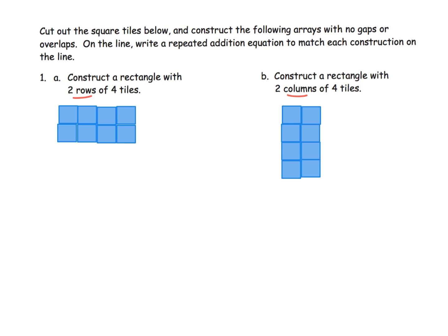When it comes to repeated addition, for mathematicians this rectangle's area is two times four or four times two — they're equivalent. However, Eureka Math is leading us to say that since this is two rows of four, they really want us to write four plus four, which gives us eight. They're looking at each row: this row has four, this row has four.